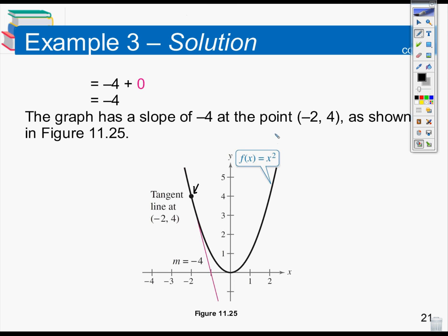Why don't we try something simple like exercise 7, which is kind of like making an approximation. And then we'll also try something more like what we just did with exercise 11 — actually using the difference quotient to find that slope. Once you're done with that, we can move on and look at finding an equation — the derivative of the function — rather than just the slope at a single point.